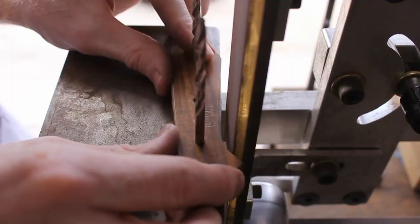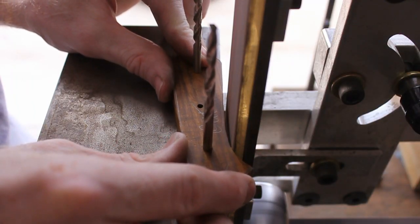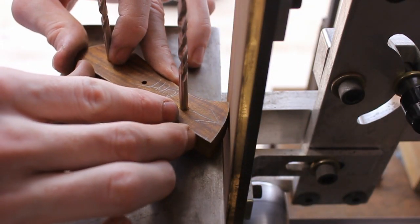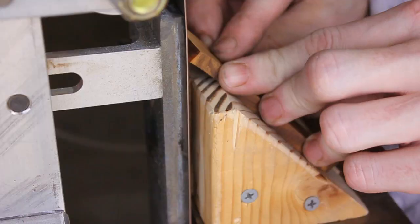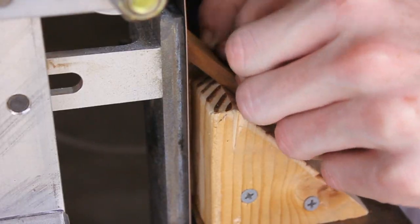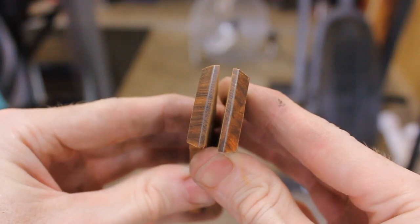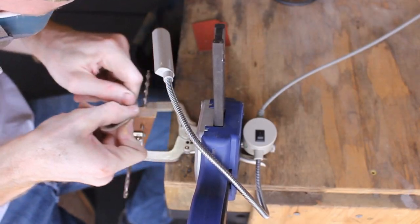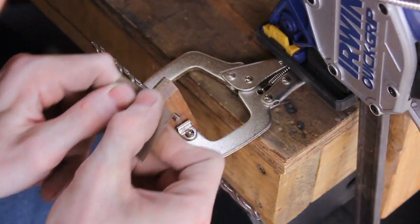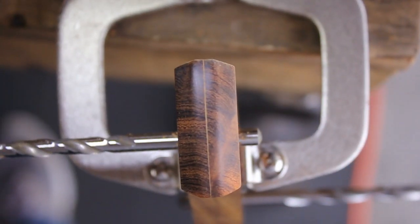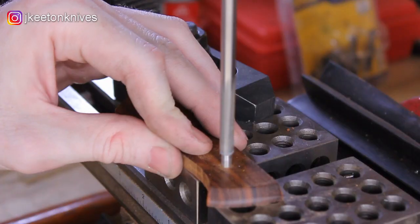Then mark out the profile of the handle, get it cut out roughly, go to the belt sander and clean that rough cut out. Then I start working on the front of the handle scales. I take these handle scales up to around a 220 grit finish on the belt sander, and then I move on to hand sanding where I go 320, 600, and in this case up to a thousand grit.